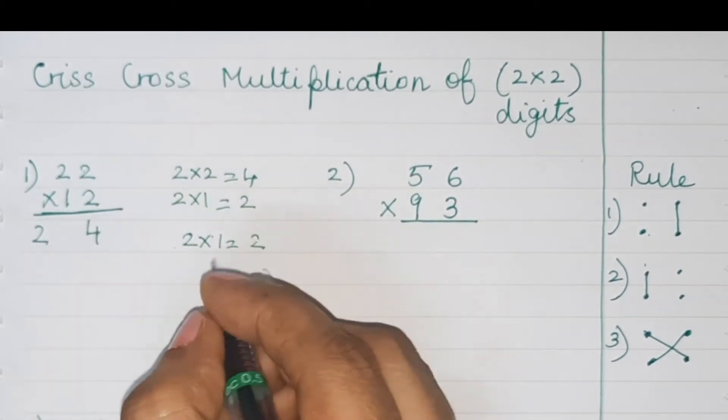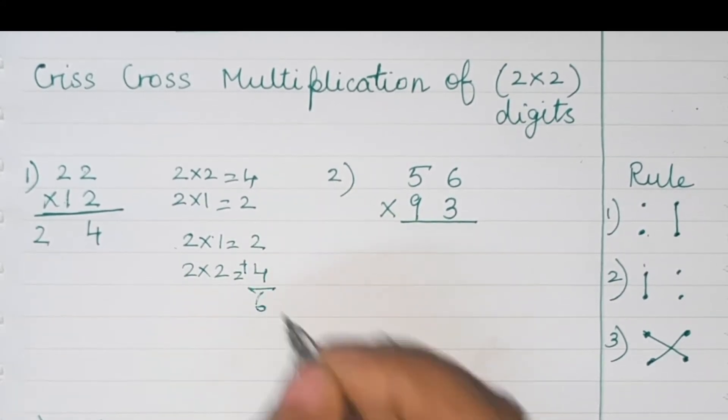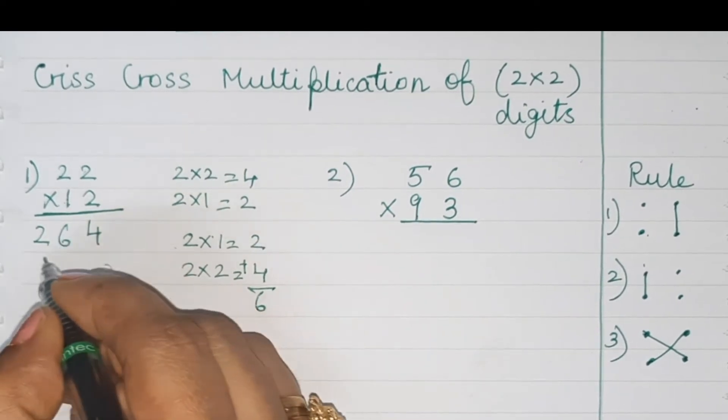Now we'll add two and four. We get six. Middle digit is six. Answer is 264. So easily we got the answer.